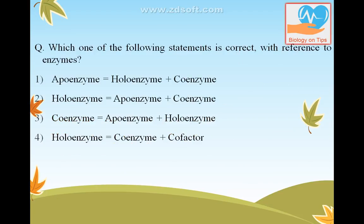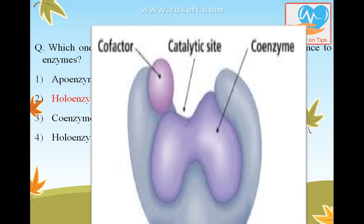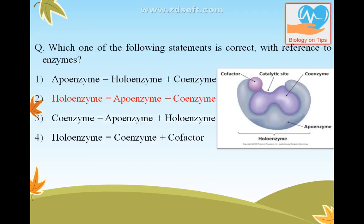Which one of the following statements is correct with reference to enzymes? The answer is: holoenzyme equals apoenzyme plus coenzyme. You can see in the diagram — when a cofactor is attached along with the apoenzyme, together the whole complex is called a holoenzyme.